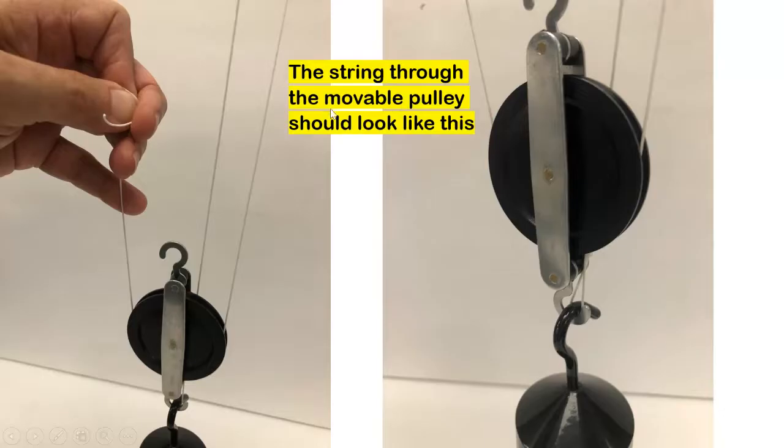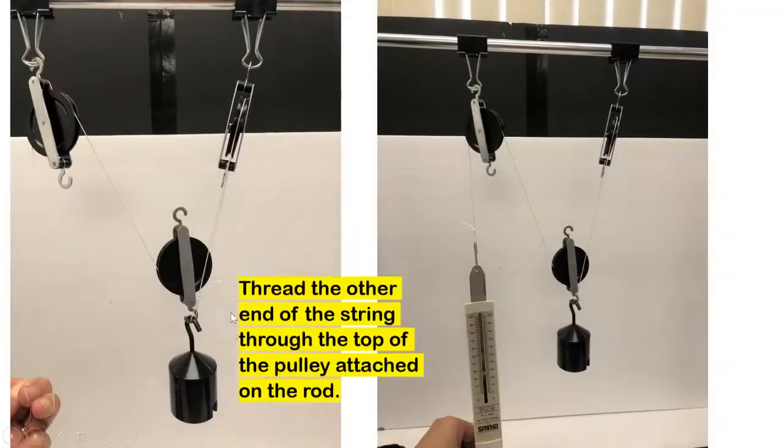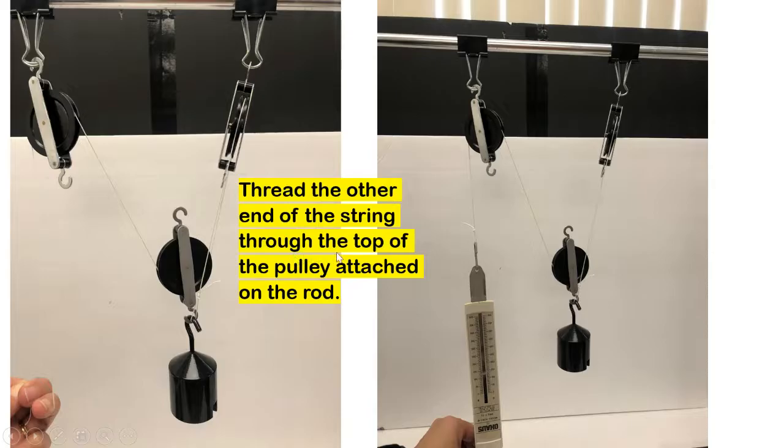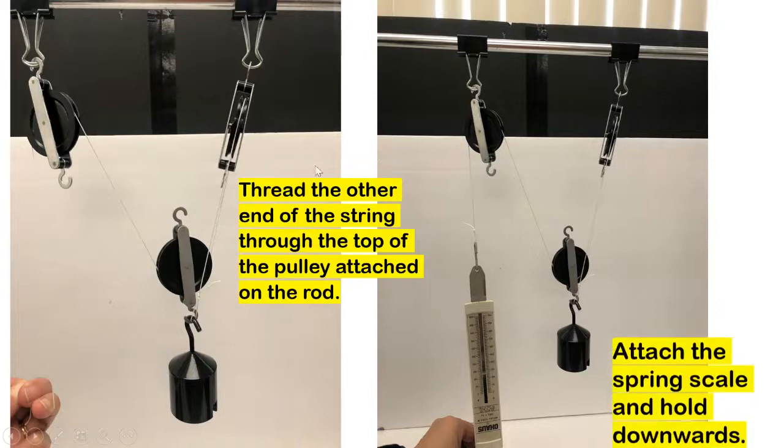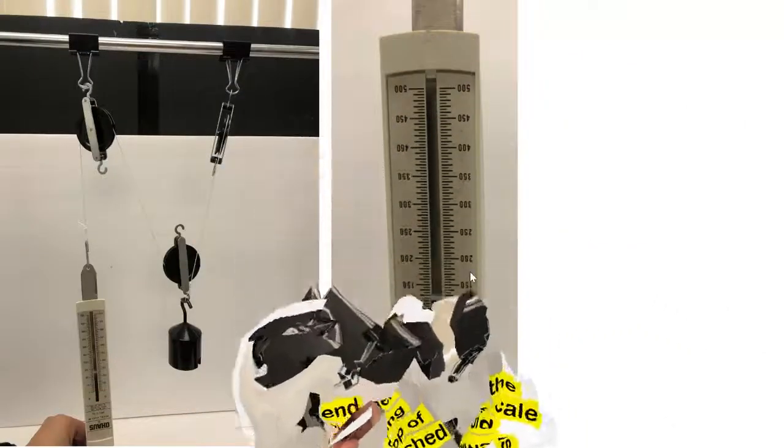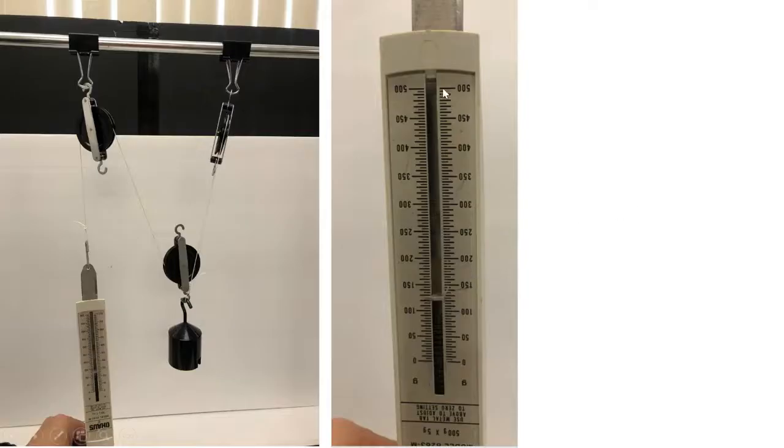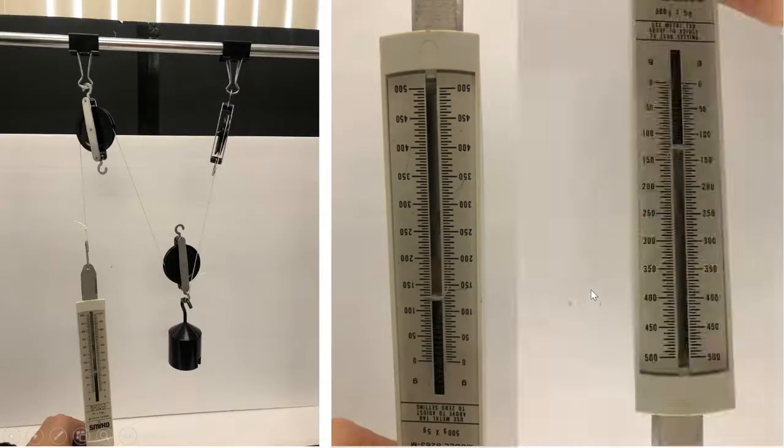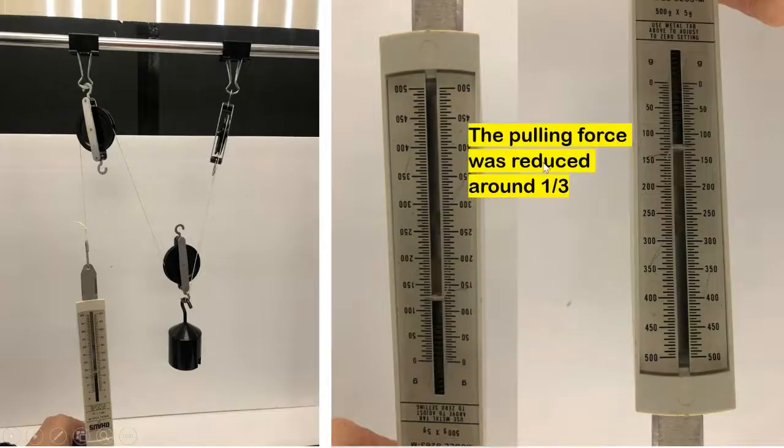The string through the movable pulley should look like this. Thread the other end of the string through the top of the pulley attached on the rod. Attach the spring scale and hold downwards. Let's flip this scale. The pulling force was reduced around one third.